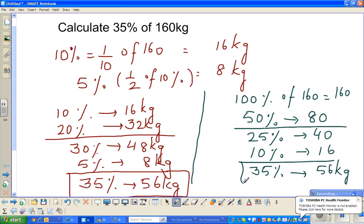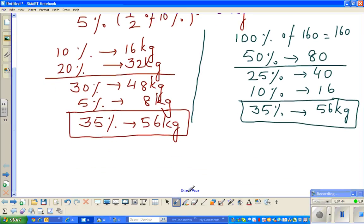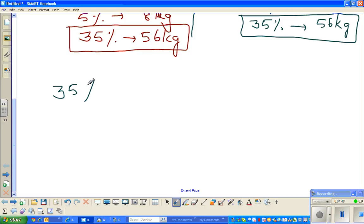So 35% is 25% plus 10%, which is 56 kg. That's the answer. In both ways we got the same answer. Now how to do this on a calculator? If the question is 35% of 160 kg, whenever you have 35%, you should know this is 35 out of 100, and 35 out of 100 is 0.35.